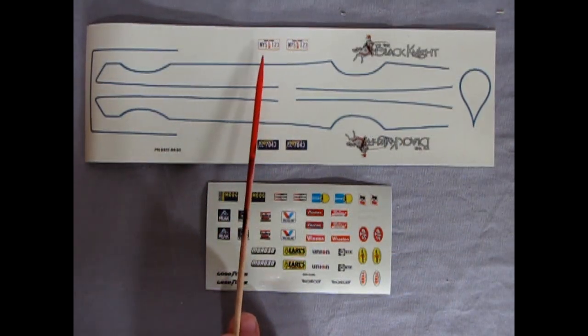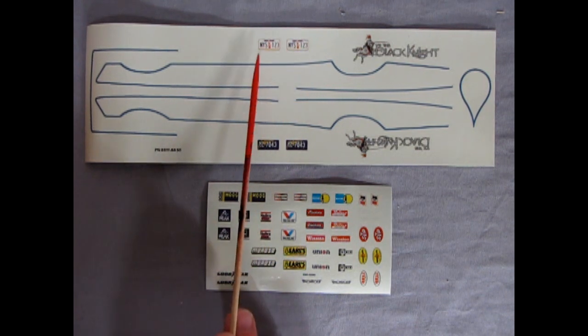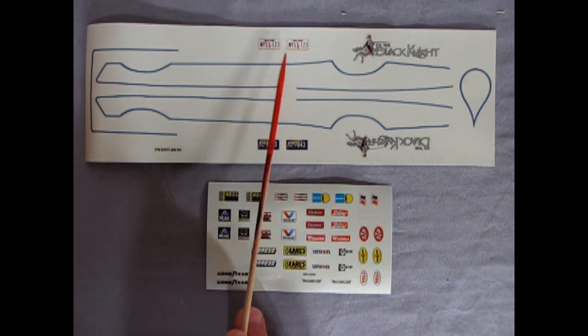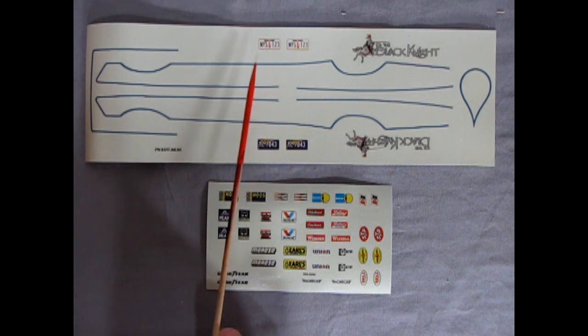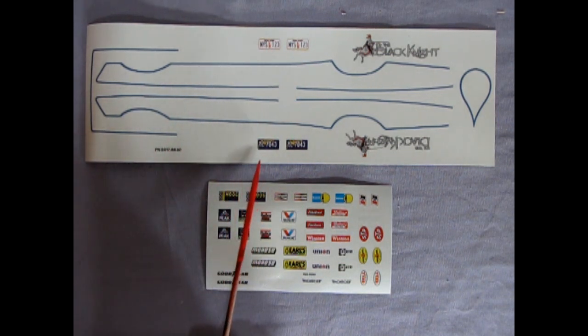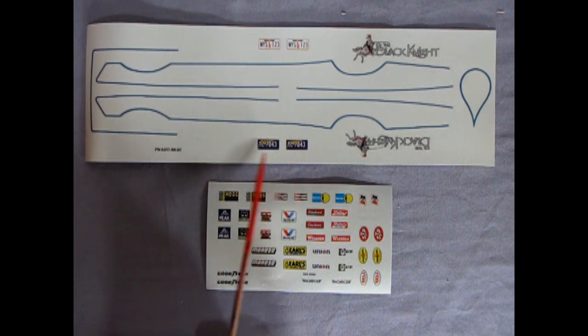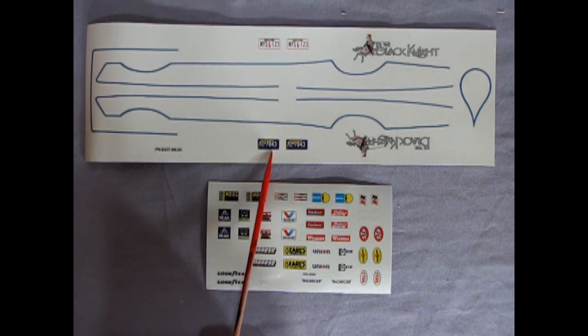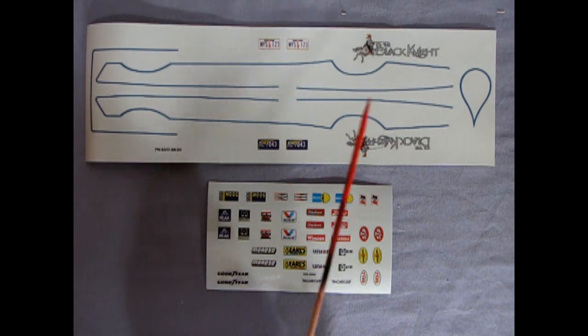And here we have our decal sheet. You get some nice New York City license plates in here. Which, of course, you could use if you're doing a diorama with your Ghostbusters. You could have this car on the street and it'll all have the New York license plates. Then we have some Kansas license plates here. Somehow, Toto, I don't think we're in Kansas anymore.